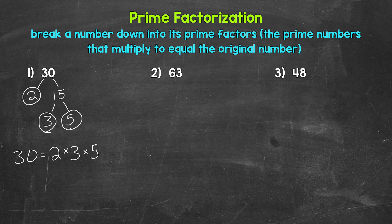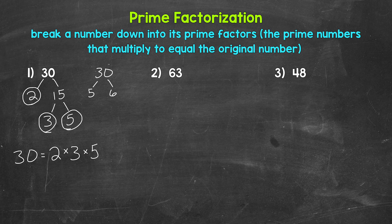Before moving on to number 2, let's go through this a different way to see if we end up with the same prime factors. Let's try starting with 5 and 6. 5 is prime, so we are done there. And then 6 we can break down to 2 and 3 — both prime. We get the same prime factors: 2, 3, and 5.